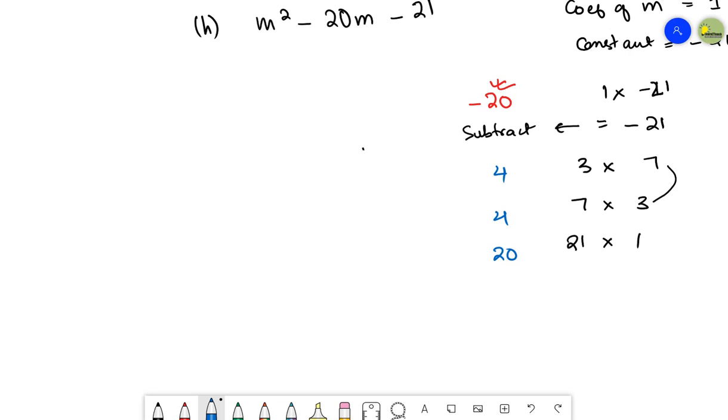This means these are the two factors: 21 and 1. These two factors, if I subtract them, I'll get 20. Since there's a minus sign with 20, I have to see which of these two factors I need to put the minus sign with. This is very clear: one of these two numbers will have a minus sign.